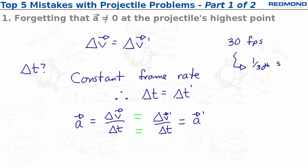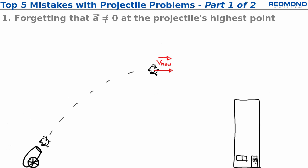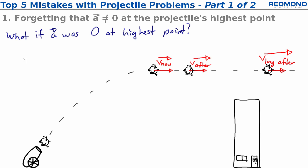Now some of you may be asking, but what about the exact instant that the projectile is at its highest point? What if acceleration was zero at the highest point? Well, in that case our chicken would miss the building, like this.